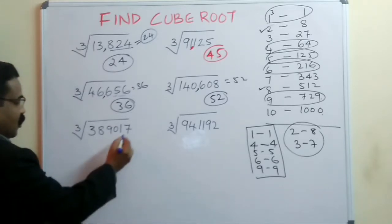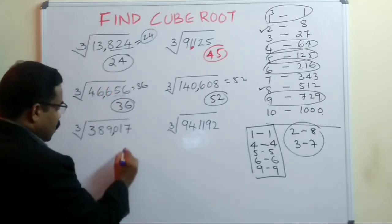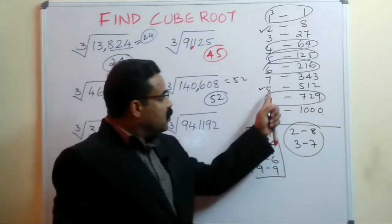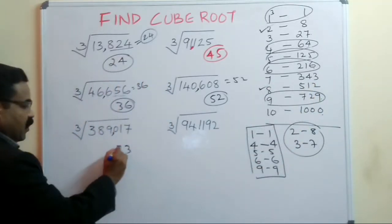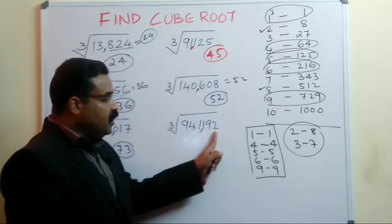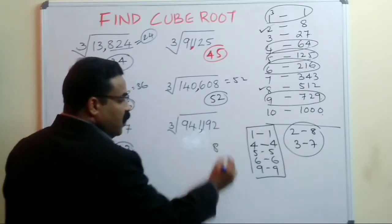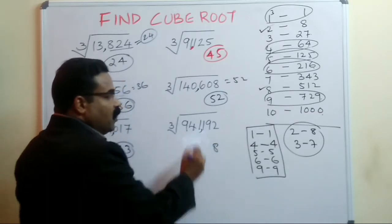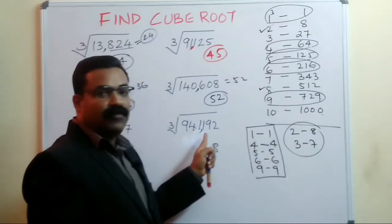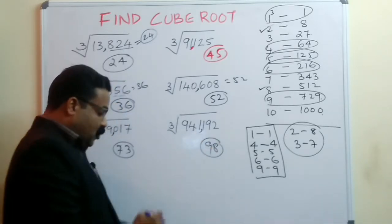Next: last three digits are 017, ending with 7. Since 3 and 7 are interchangeable, the answer ends with 3. What remains is 338 — we know 7³ = 343, so the perfect cube before that portion gives 7, making the answer 73. For the last number: last three digits are 192, ending with 2, so the answer ends with 8. What remains is 941; the perfect cube before it is 729 = 9³, giving the cube root as 98.